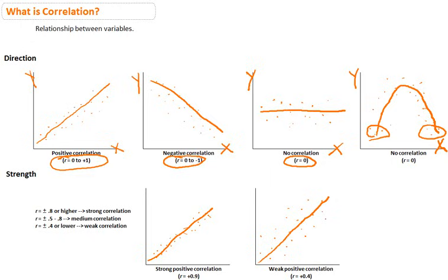Overall, remember that correlations tell us about a relationship between variables, how strong that relationship is, and in what direction those variables are going. However, we cannot infer causality or say that one variable is impacting or affecting the other.